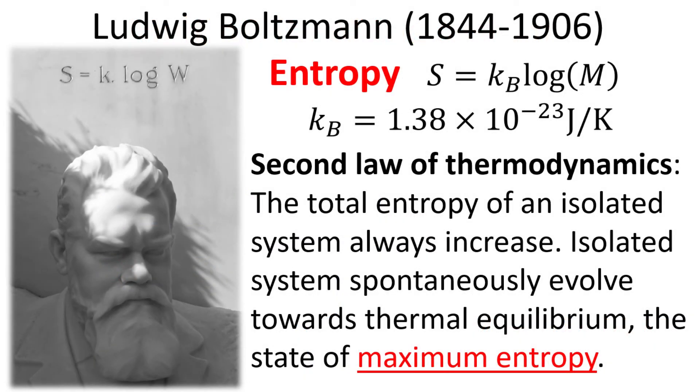In order for us to proceed to the next step, we need to first borrow an equation from Ludwig Boltzmann's tombstone. Here, the entropy s has a definition in terms of the number of microstates, given by k sub b, the Boltzmann constant multiplied by the natural log of the system multiplicity M. An important insight by Boltzmann into the second law of thermodynamics is the realization that isolated systems spontaneously evolve towards thermal equilibrium, the state of maximum entropy.